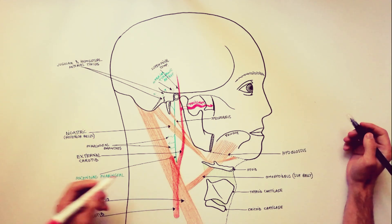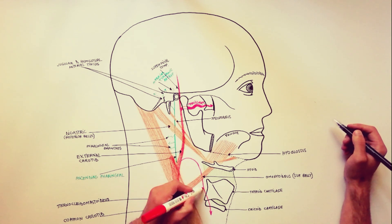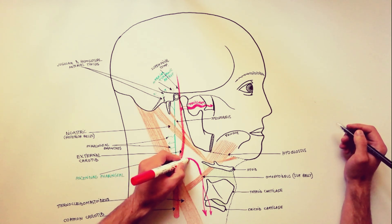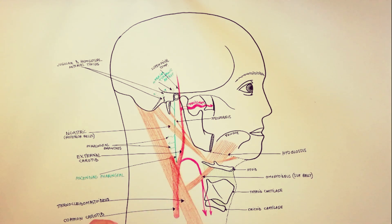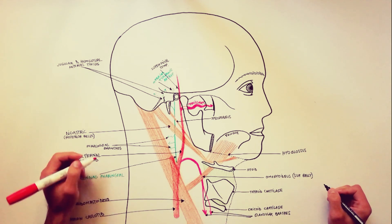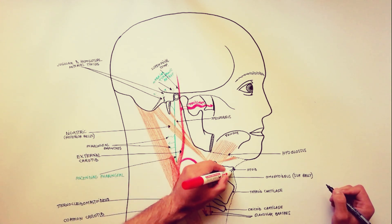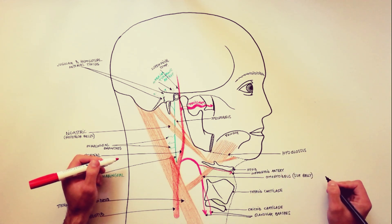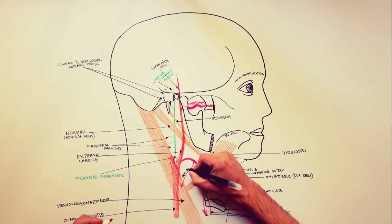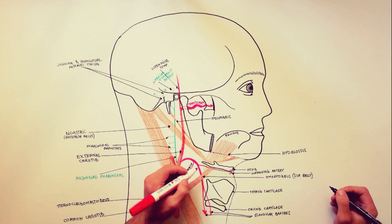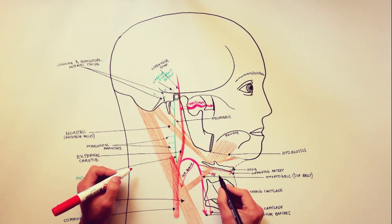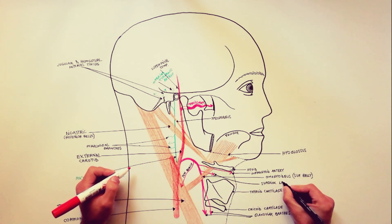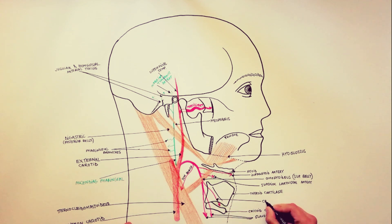The superior thyroid artery arises from the external carotid artery just below the greater cornu of the hyoid bone and ends in the thyroid gland, usually by splitting into two main glandular branches. The superior thyroid also gives off collaterals: the infrahyoid artery, which passes just below the inferior margin of the hyoid bone; the sternocleidomastoid branch, directed posteriorly to supply the sternocleidomastoid; the superior laryngeal artery, which pierces the thyrohyoid membrane; and the cricothyroid artery, which descends toward the cricothyroid membrane.